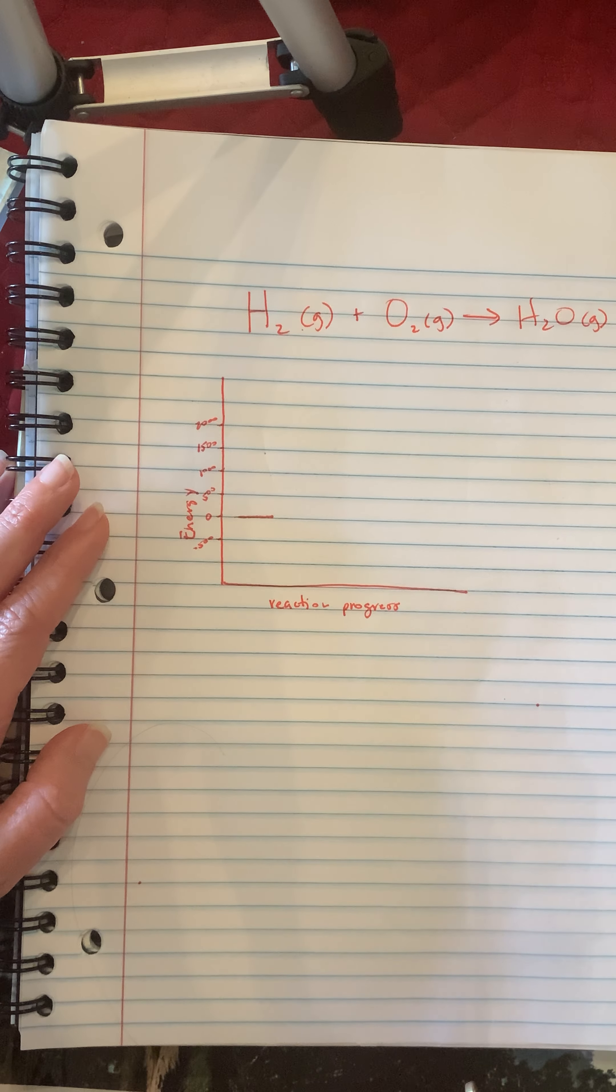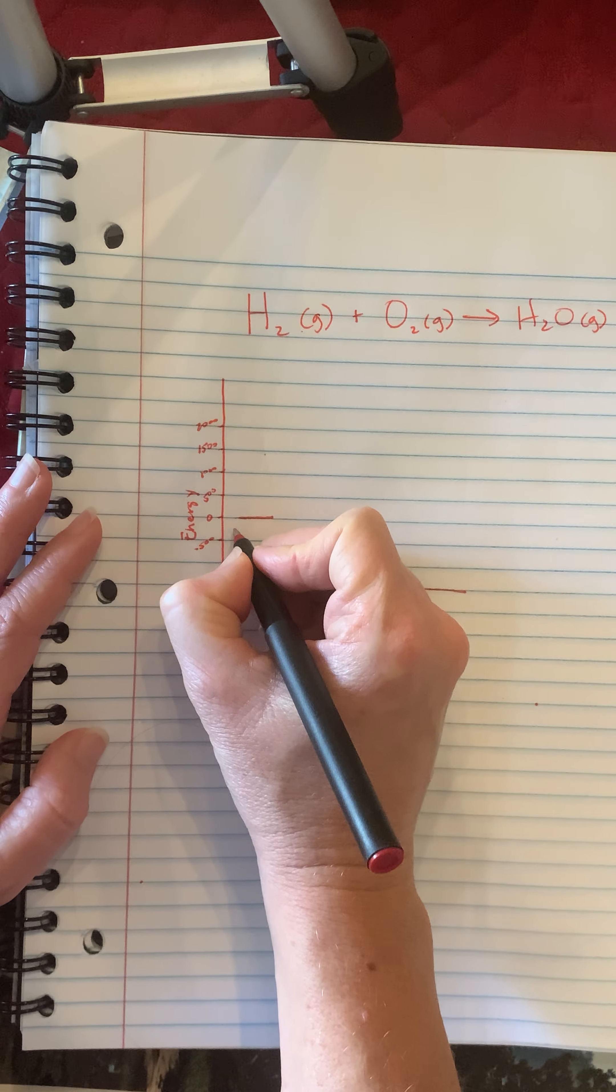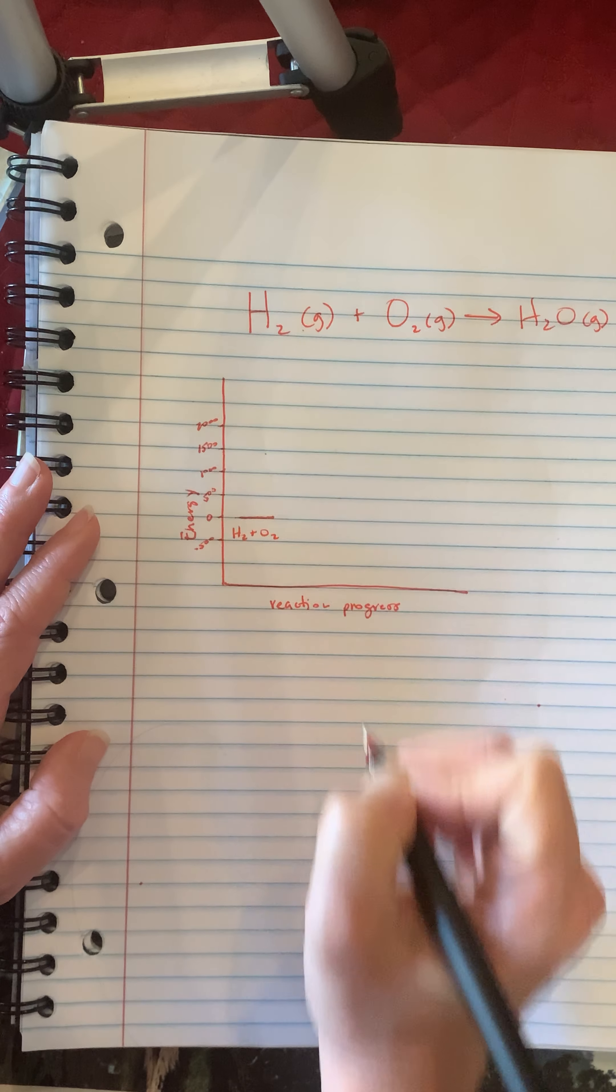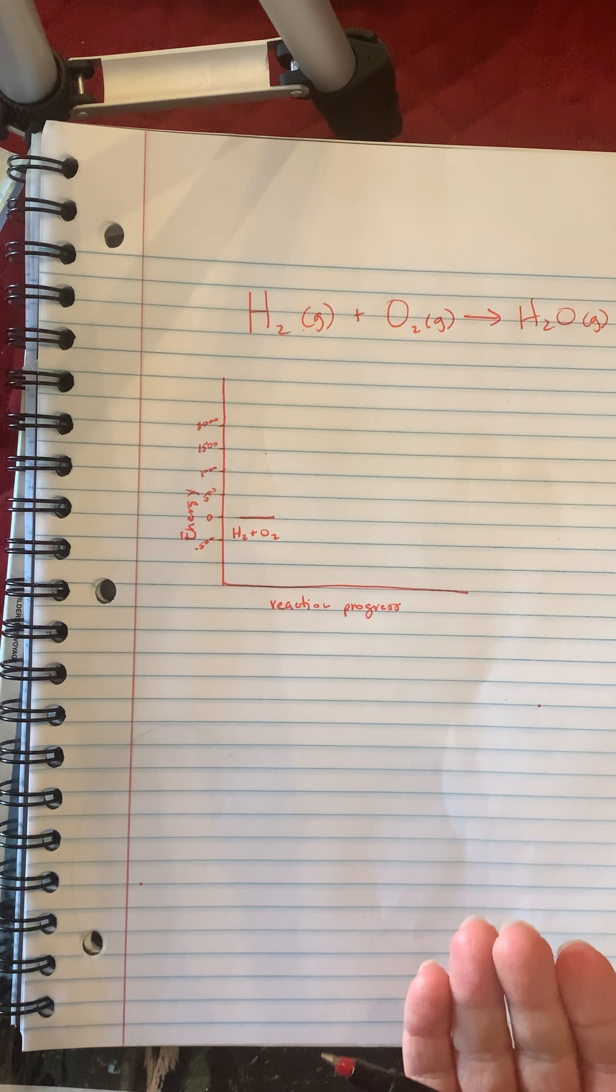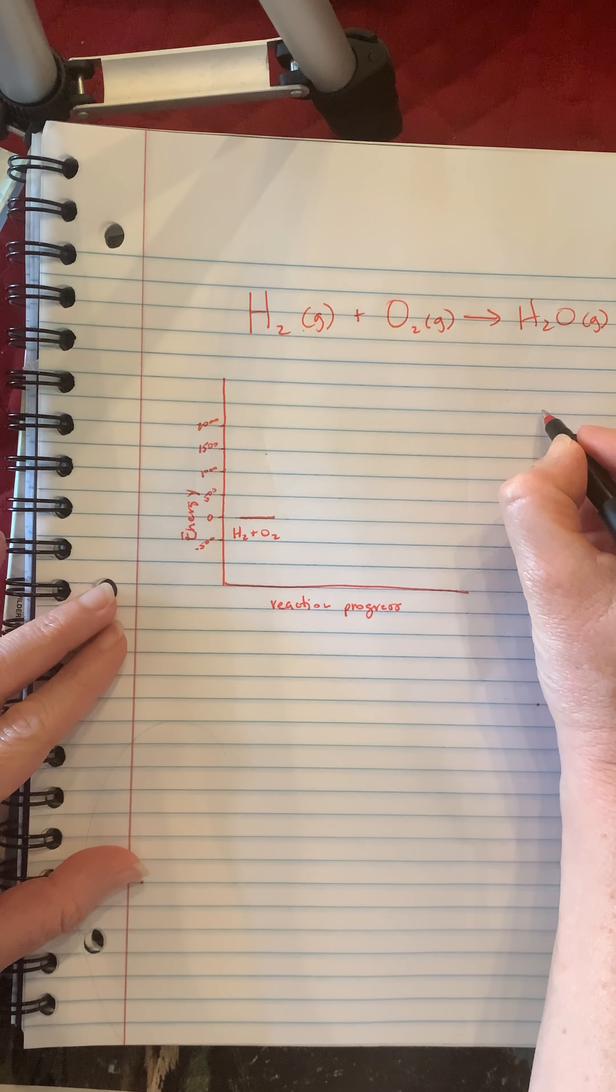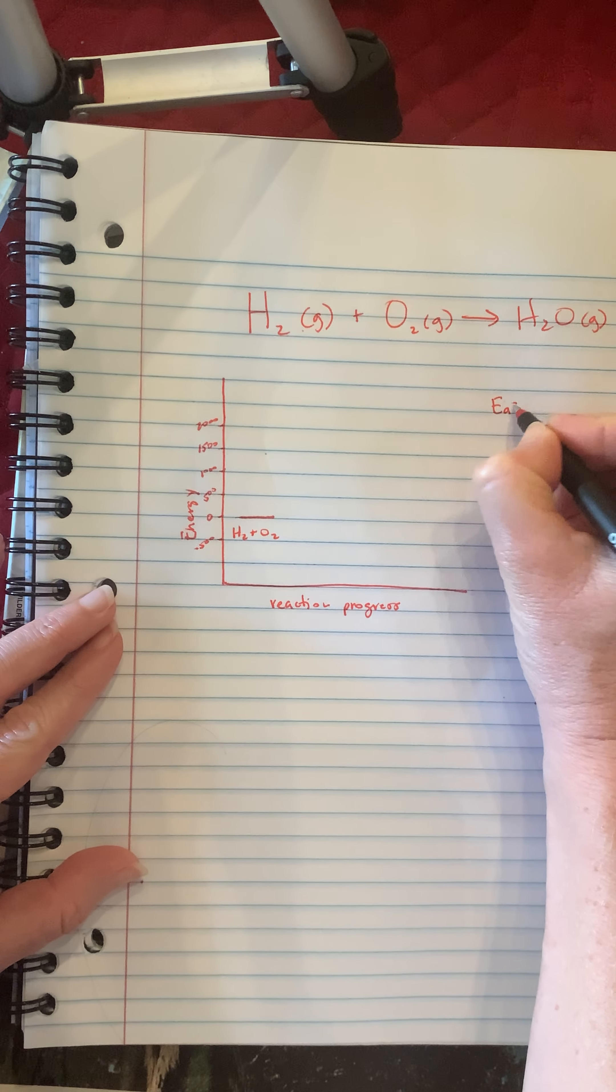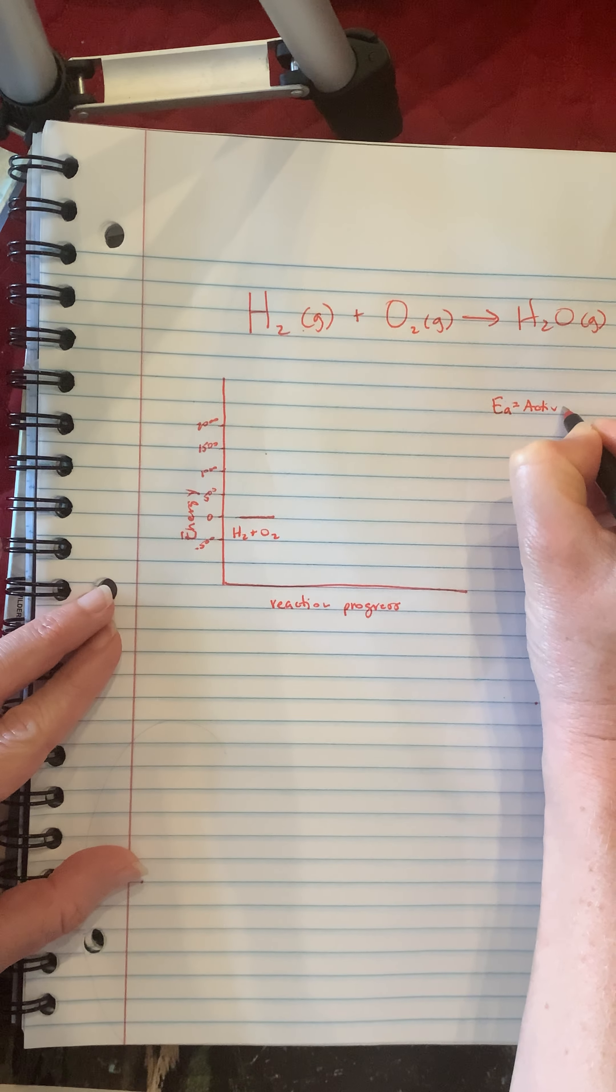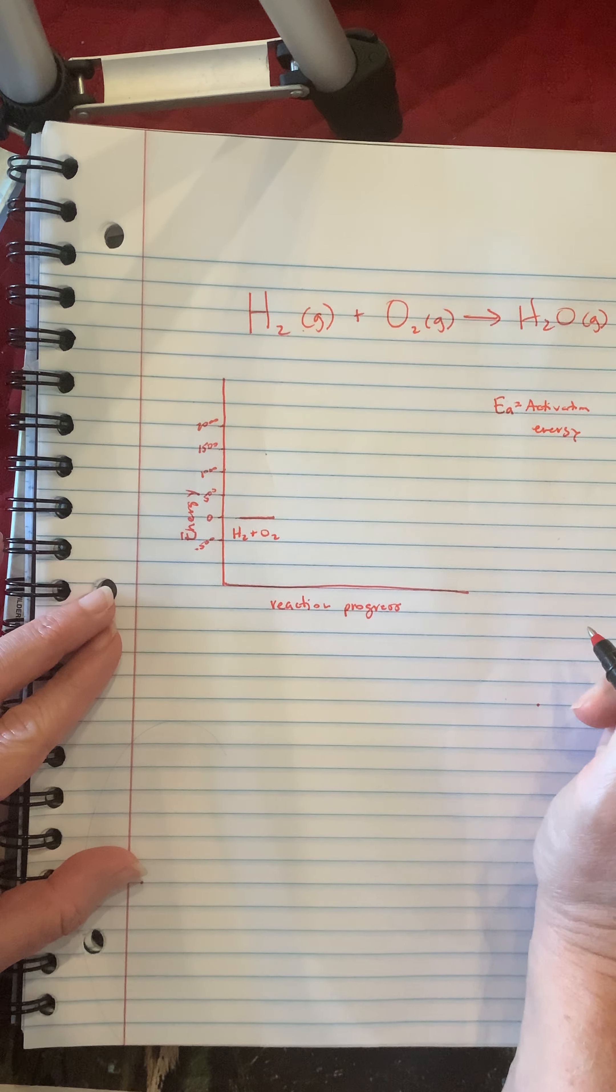Okay, so for this reaction we're gonna start at an energy of zero with our reactants, H2 plus O2. And in order to start this reaction we have to put in a certain amount of energy. That is going to be our activation energy. So over here I'm going to do my little key. EA is activation energy, the energy required to start the reaction.